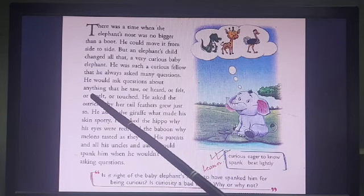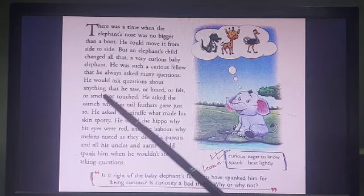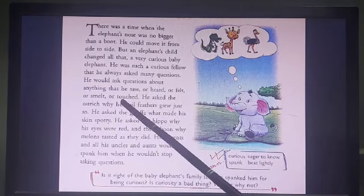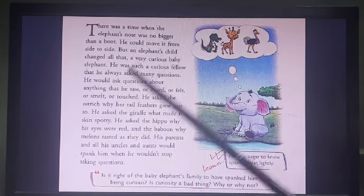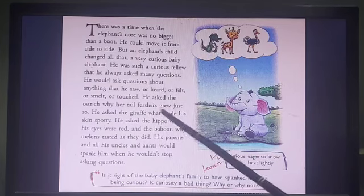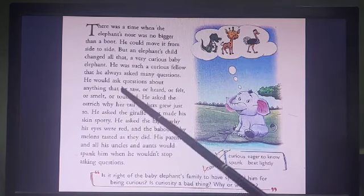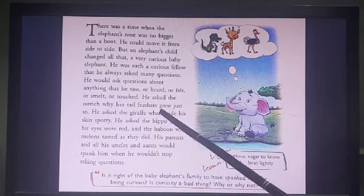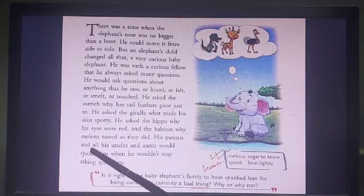So we also keep on asking questions. He would ask questions about anything he saw, heard, felt, smelled, or touched. He asked the ostrich why her tail feathers grew just so. He asked the giraffe what made his skin so spotty — we know that giraffe skin is spotty, and this baby elephant wanted to know why. He even asked the hippo why his eyes were red, and the baboon why melons tasted the way they did.